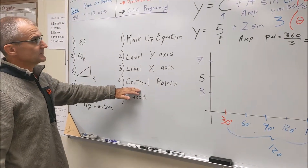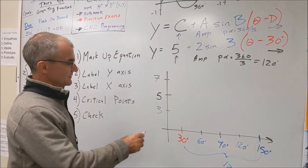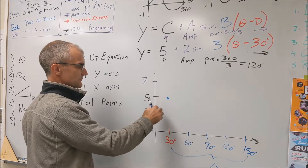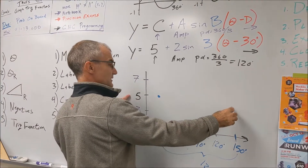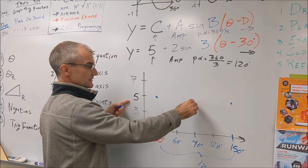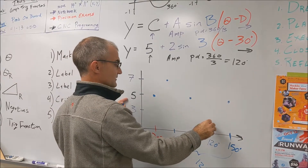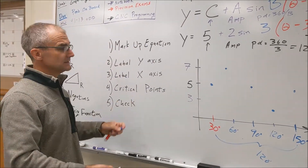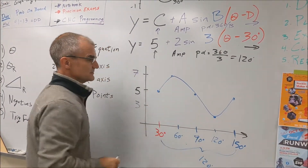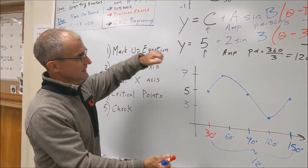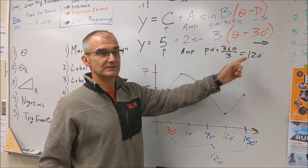Step four: put in the critical points for that function. It's a sine function, so it starts in the middle — meaning the middle of the y-axis values. On the x-axis, the endpoints are on the middle of the y-axis. The middle point of the x is the middle of the y. The first quarter goes up, the third quarter goes down. Now that I have all my critical points, I connect the dots. There's my sine graph: shifted up 5, amplitude of 2, period of 120, starting 30 degrees over.